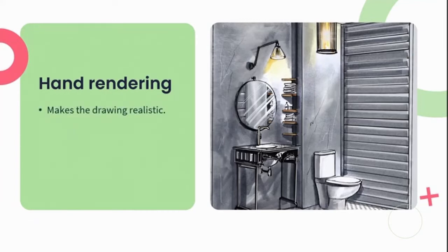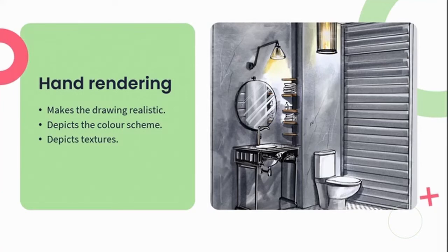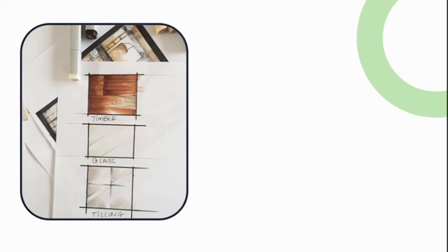Let's look at some of the benefits of hand rendering. First, it makes the drawing look realistic. It depicts the color scheme the designer wants to use. It's also a great tool for depicting texture, giving a holistic view of what textures are being applied. And it depicts mood and style — we really want to give the client an idea of what feeling they might achieve within that space. Let's look at some primary texture examples and how to create them to apply realistic renders by hand.